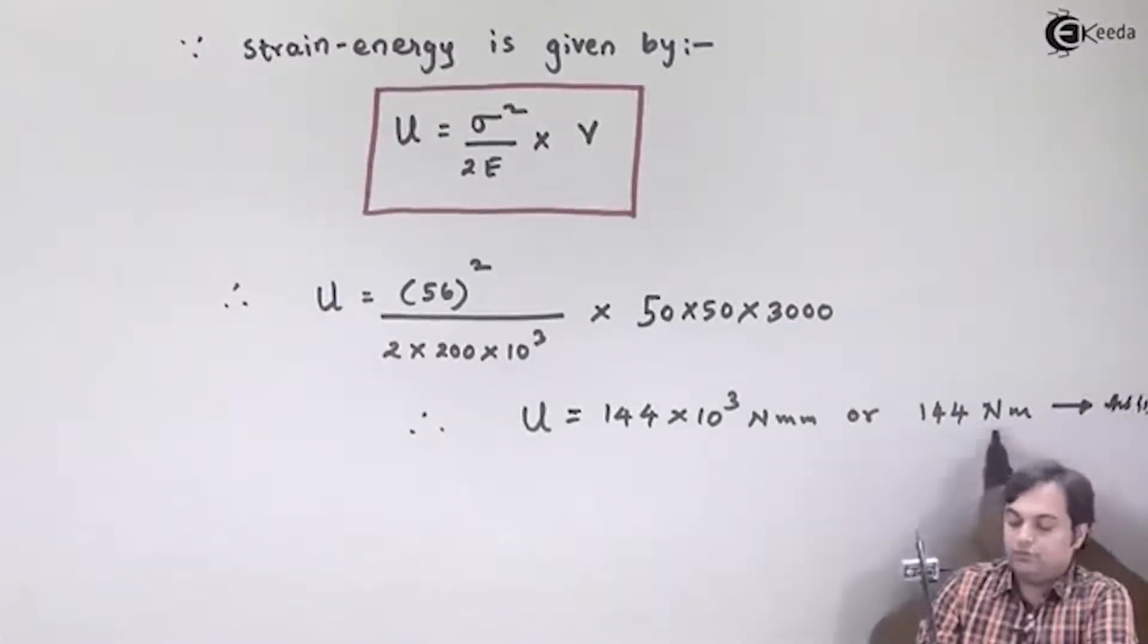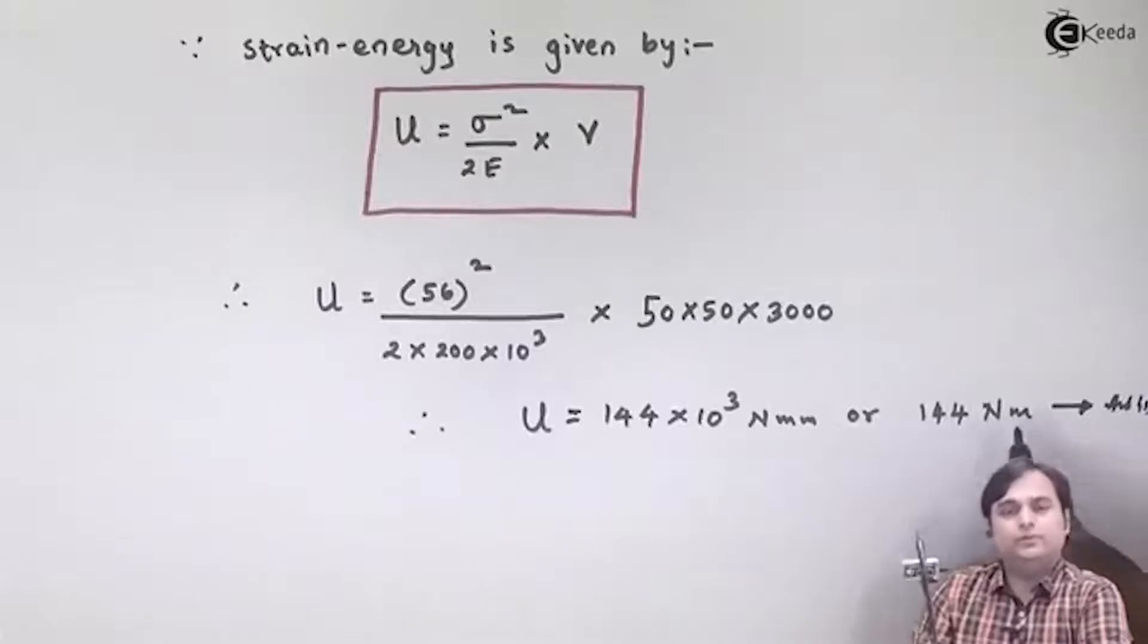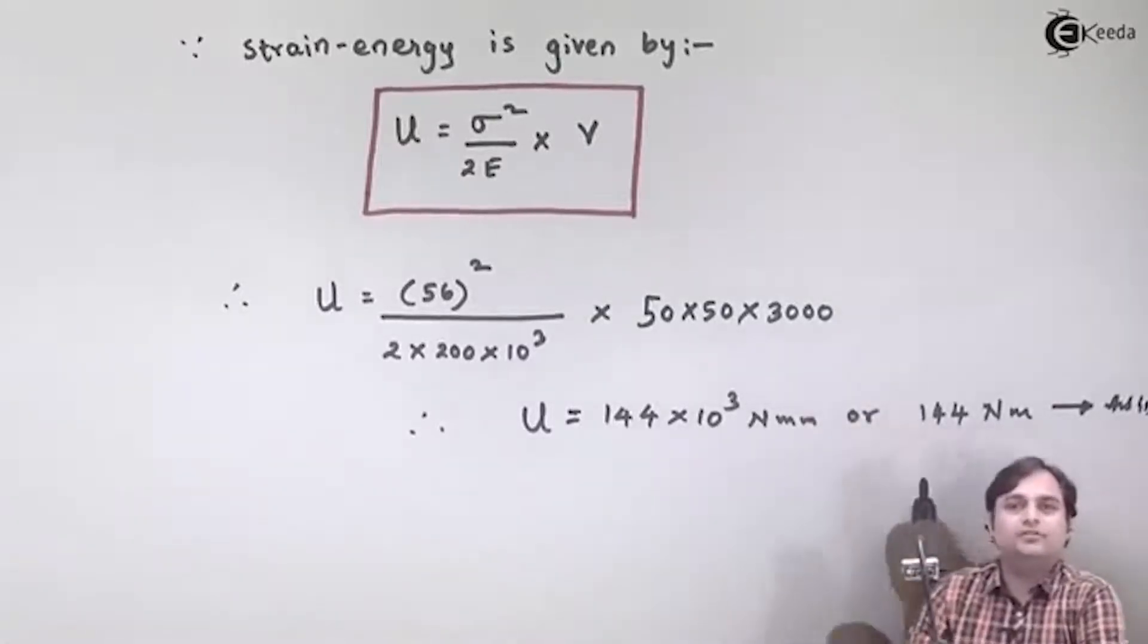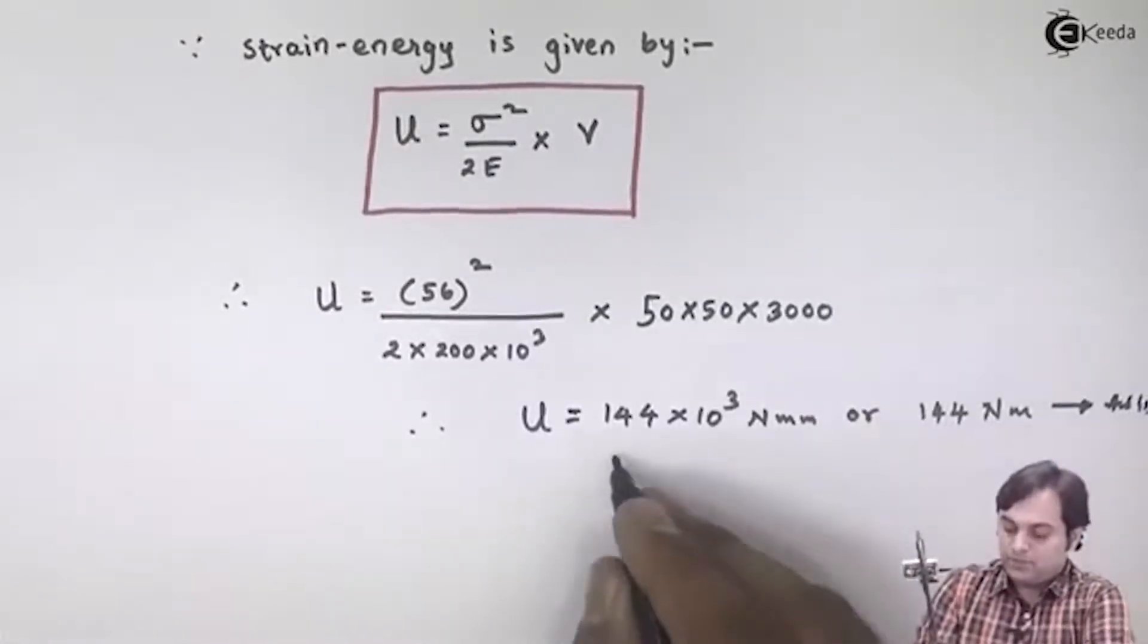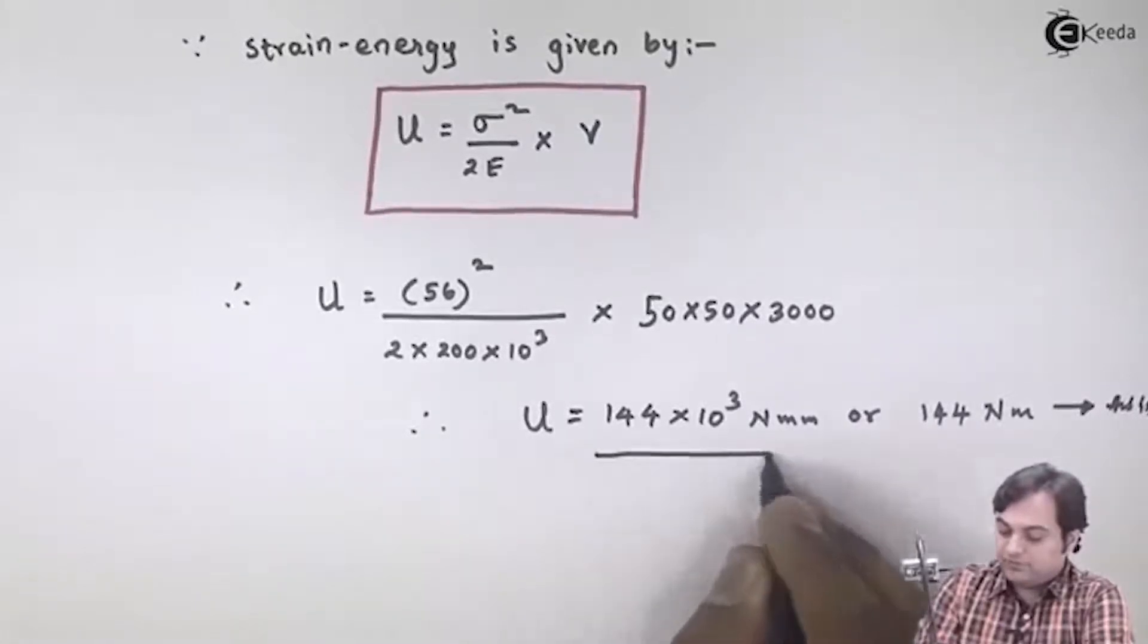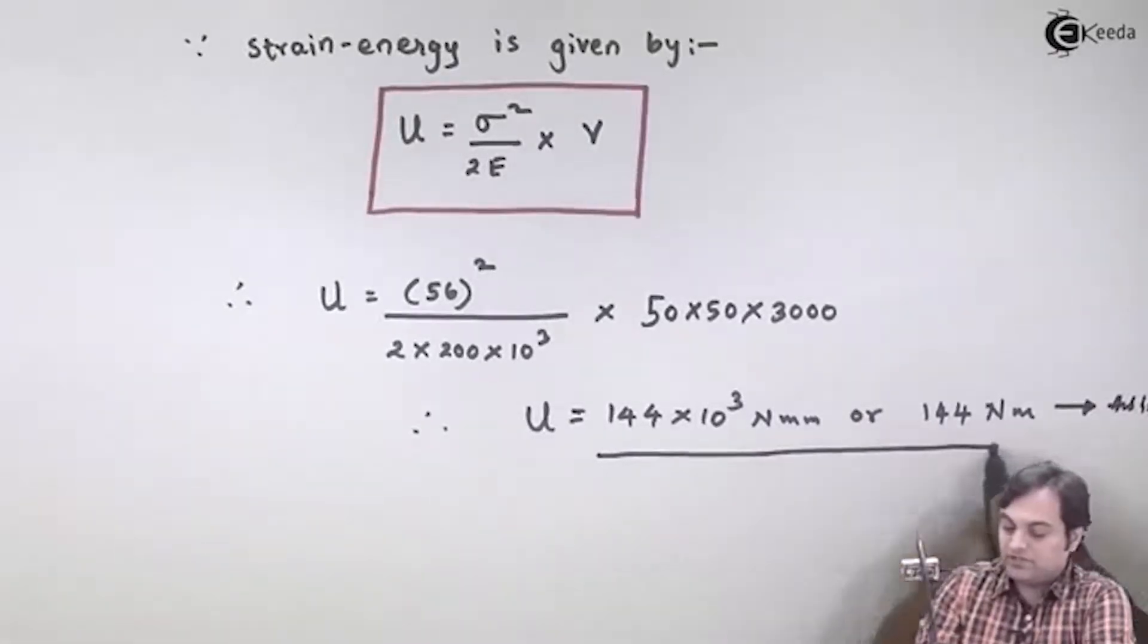And this newton meter can also be called as joule, because energy can also be given in the form of joule or kilojoule. So this is the formula or you can say the final answer of strain energy.